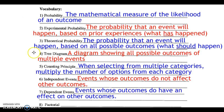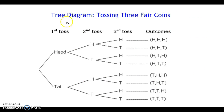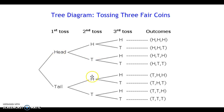I want to highlight a couple of these definitions. A tree diagram is a diagram showing all possible outcomes of multiple events. This is an example of a tree diagram — tossing three fair coins. This first toss represents heads and tails. The second toss represents heads and tails if you got heads on the first toss, or heads and tails if you got tails on the first toss. So it really represents all the different possible outcomes.